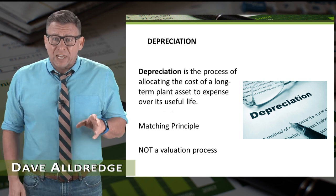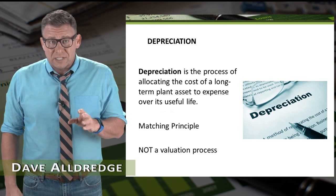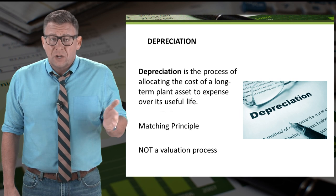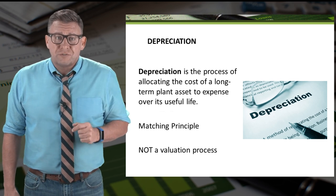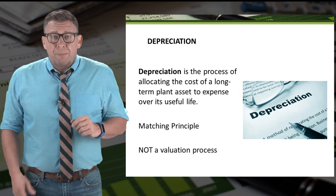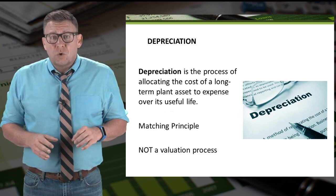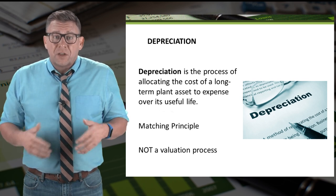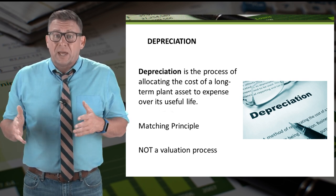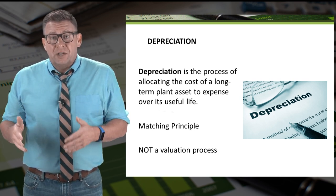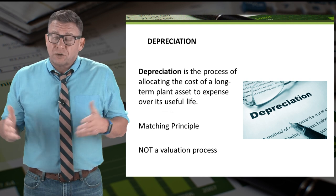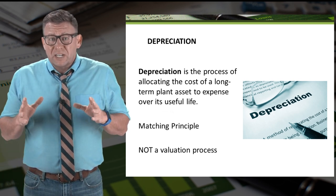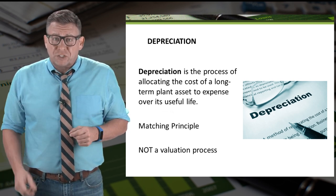Depreciation is a process of allocating the cost of a long-term plant asset to expense over its useful life. If a plant asset is going to generate revenue for five years, then the cost of the plant asset needs to be spread to expense over five years. This keeps us in alignment with the matching principle.